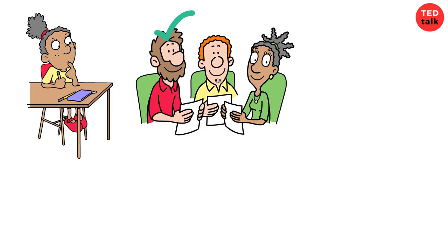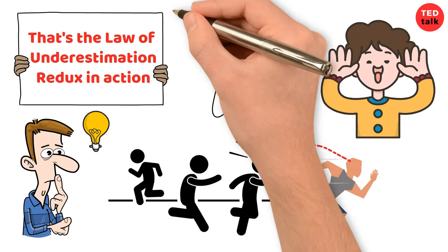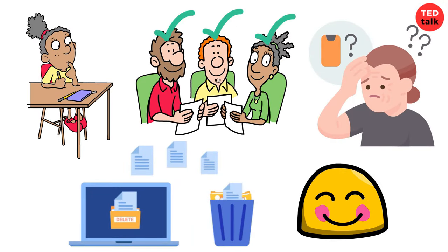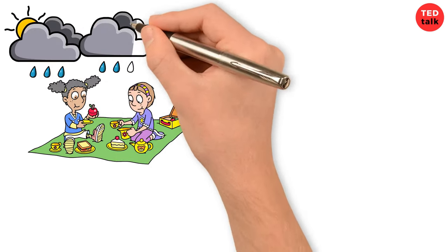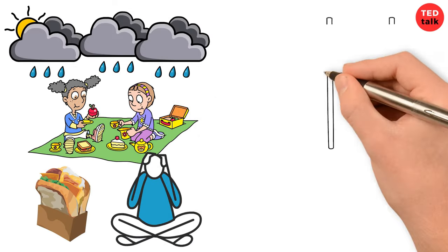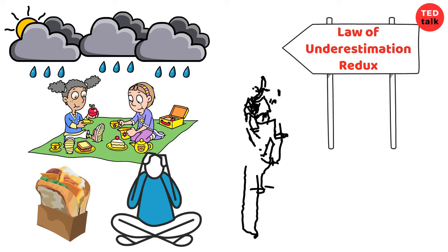You might assume everyone's going to do their part and contribute equally, but then someone forgets to do their share of the work or accidentally deletes the entire presentation. That's another example of the law of underestimation redux: thinking everything will go smoothly until something unexpected happens. It's like going to a picnic and assuming the weather will be sunny all day, but then out of nowhere, dark clouds roll in and it starts pouring rain, soaking everyone's sandwiches and ruining the fun.